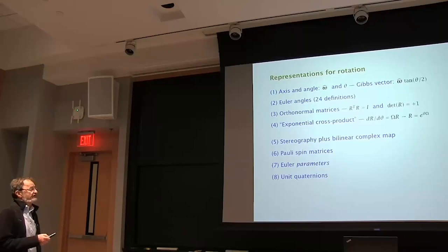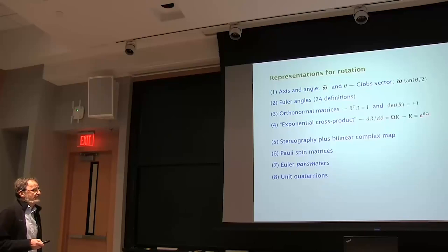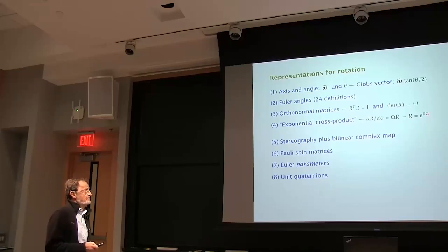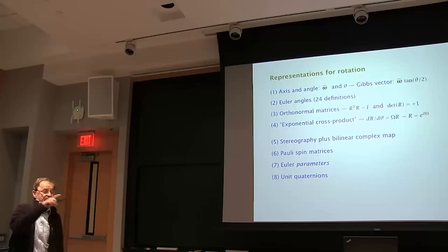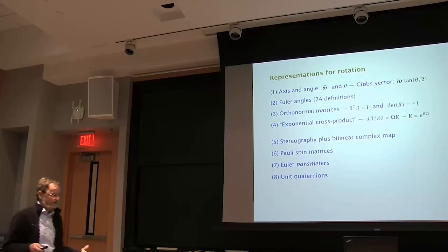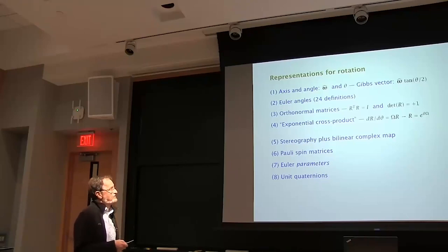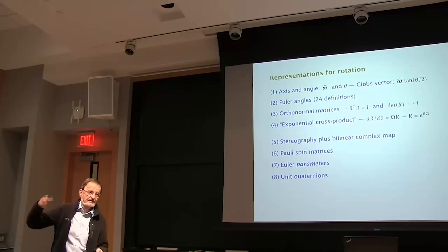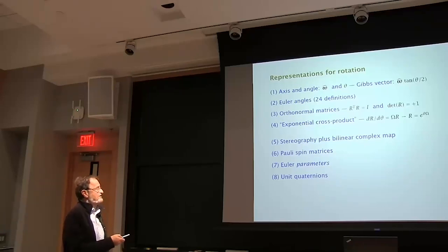Then we have orthonormal matrices, which you're all familiar with, with their two constraints. There's also a more exotic representation of a rotation matrix in exponential form, where a capital omega is the 3-by-3 skew-symmetric matrix for cross products. The exponential of a matrix means using the Taylor series for e^x, where x is now the matrix: 1 plus x plus one-half x squared and so on.